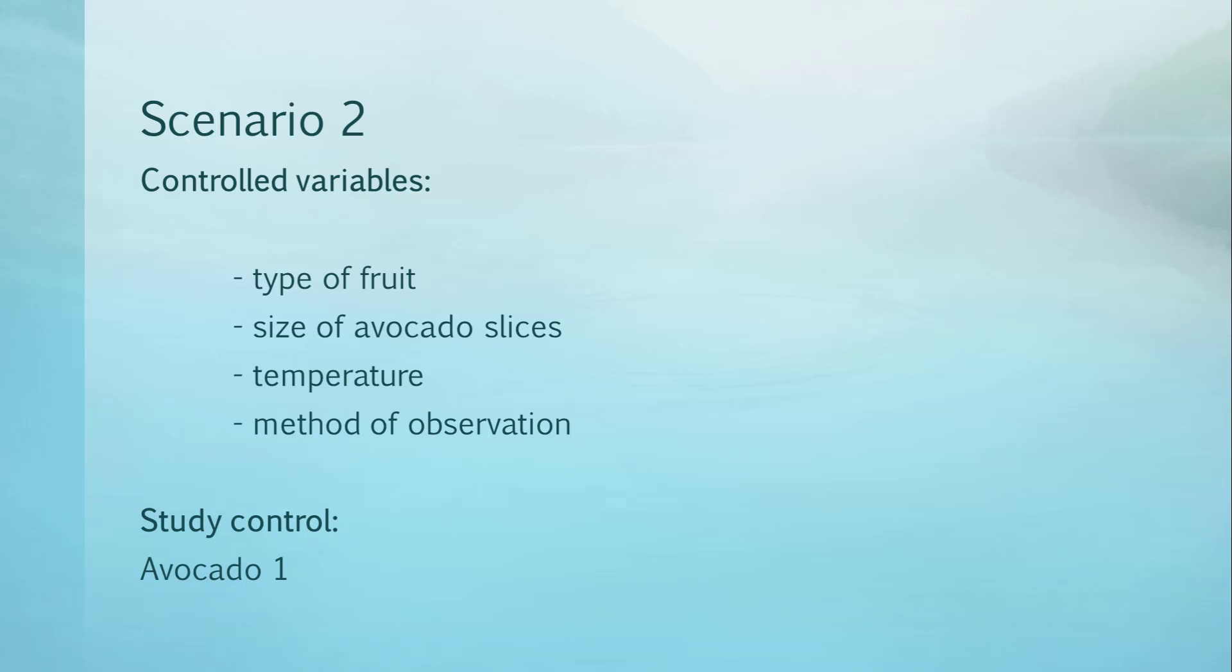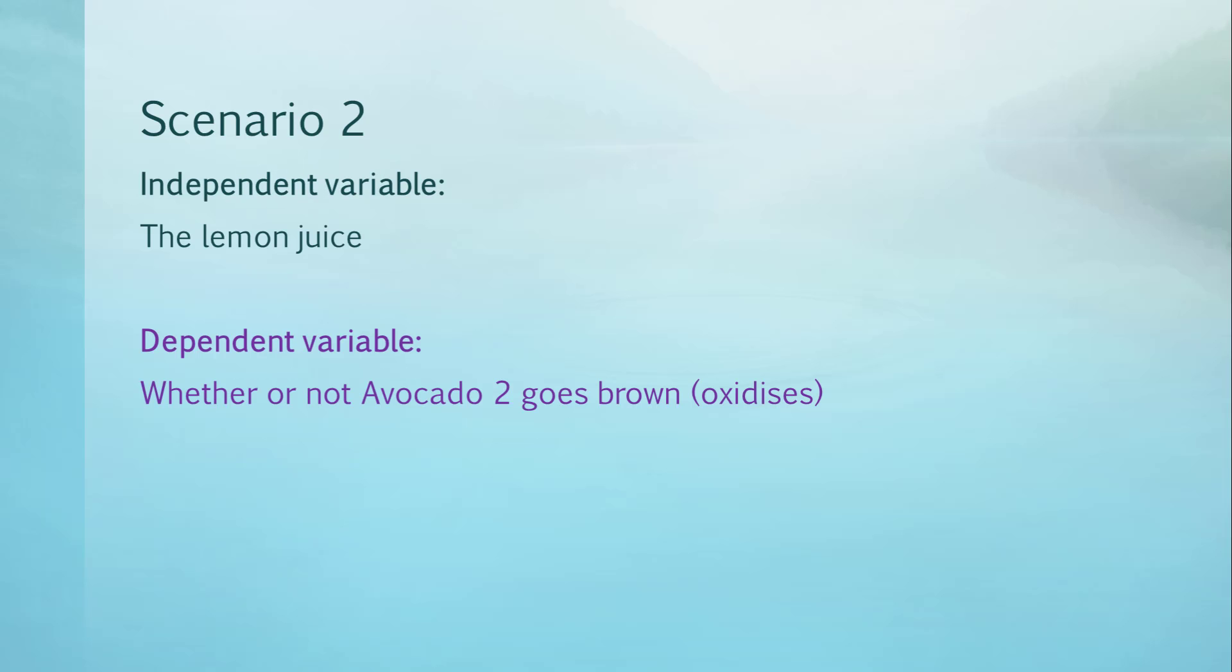The study control is avocado 1. The independent variable is the lemon juice and the dependent variable is whether or not avocado 2 goes brown or oxidizes.